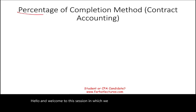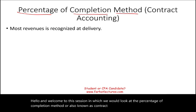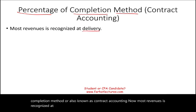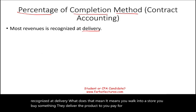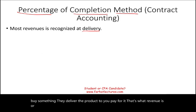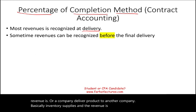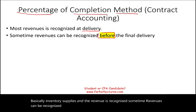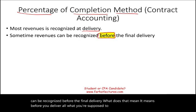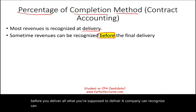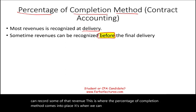Welcome to this session on the percentage of completion method, also known as contract accounting. Most revenues are recognized at delivery — when a store delivers a product to you, or a company delivers inventory to another company. However, sometimes revenues can be recognized before the final delivery. This is where the percentage of completion method comes into place: recognizing revenue before the final delivery.